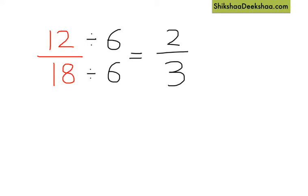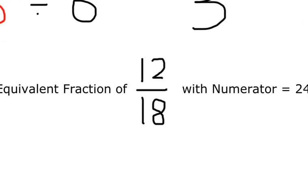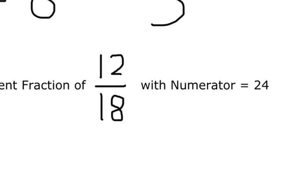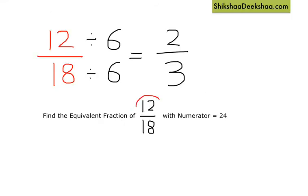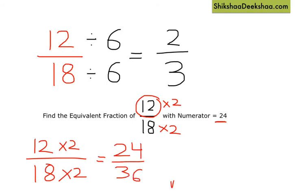But if a question asks: find the equivalent fraction of 12 by 18 with numerator 24 — I need to convert the numerator to 24. What should I do to convert 12 to 24? Obviously, I need to multiply 12 by 2. So I apply the same operation to the denominator: 12 multiplied by 2 over 18 multiplied by 2 gives me 24 by 36. That's my answer.